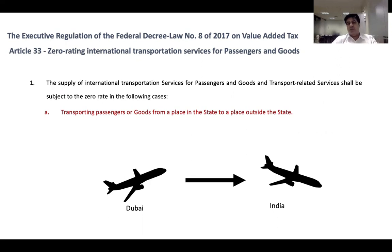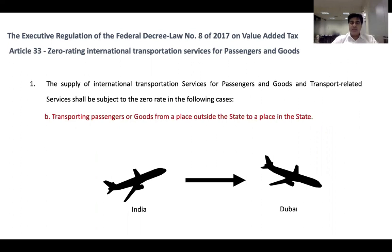I'm using the example of a flight, but it can be a ship or road transport also, which can move from UAE to any of the Middle East countries — that's also part of international transport. The second section says: transporting passengers or goods from a place outside the state to a place inside the state. So again, we are referring to the reverse — a return ticket coming from India back to Dubai. That's also international transport, and it's classified as zero rated.